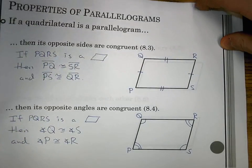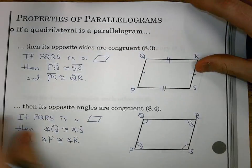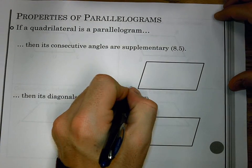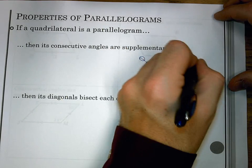Now, opposite angles congruent goes nice with what the next one is as well. And that is looking at the consecutive angles. So if a quadrilateral is a parallelogram, then its consecutive angles are supplementary.